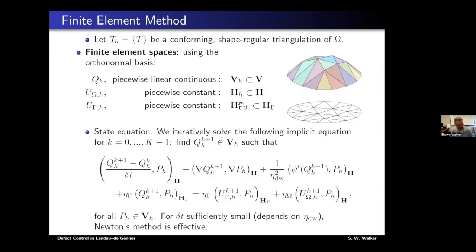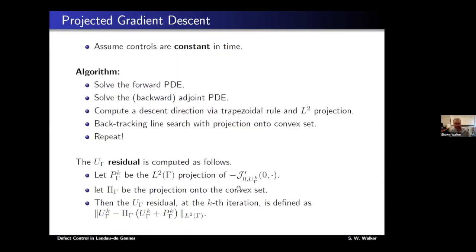For the finite element method, the space is just H1, so we use standard Lagrange finite elements — piecewise linear is fine. We use a fully implicit method in time, which seems most convenient, and Newton's method for the nonlinearity. We assume the controls are constant in time. The basic algorithm is: solve the forward PDE, solve the backward adjoint PDE, compute a descent direction, perform projected gradient descent with backtracking line search, and repeat.